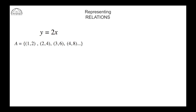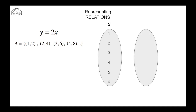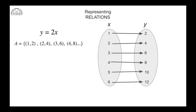One way to represent a relation is using a bubble diagram. We have one bubble representing the x values — one through six — and another bubble representing the y values. The x values we take as inputs and the y values as outputs. When we input 1 the output is 2, input 2 gives output 4, input 3 gives output 6, input 4 gives output 8, and so on. This bubble diagram is one way to represent a relation.